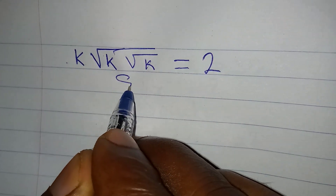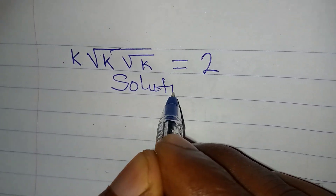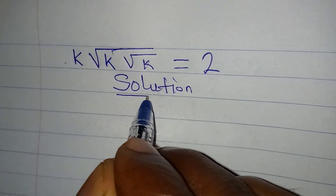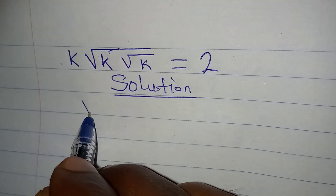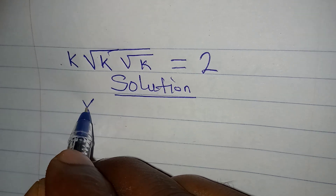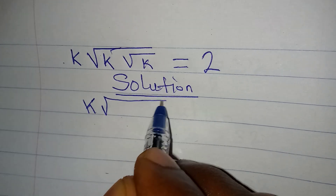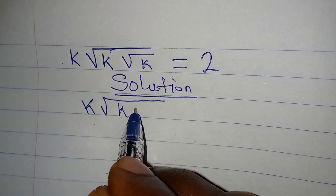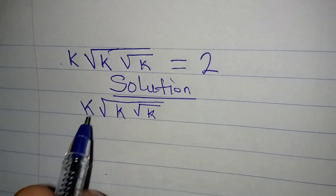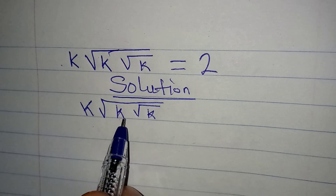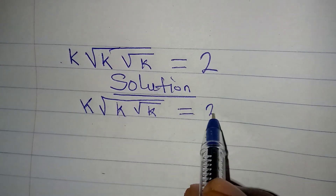Hello everyone, welcome to Foucault Mathematics, where we provide solutions to math problems in detail. So this is what we have before us today: k times the square root of k times the square root of k equals 2.